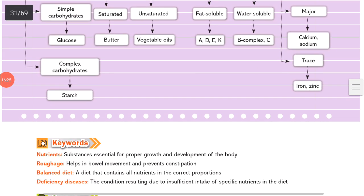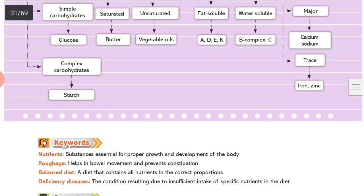Key words: nutrients are substances essential for proper growth and development of the body. Roughage or dietary fiber helps in bowel movement and prevents constipation. Balanced diet is a diet that contains all nutrients in correct proportions. Deficiency diseases are conditions resulting due to insufficient intake of specific nutrients in the diet.